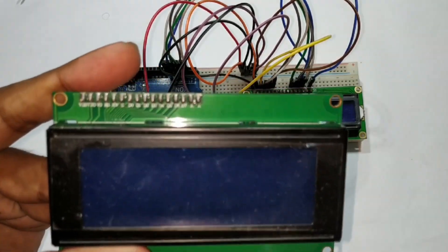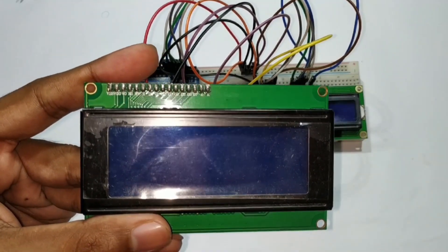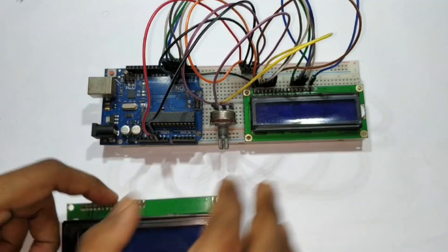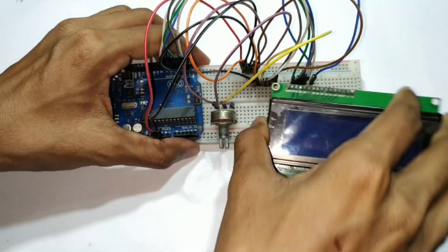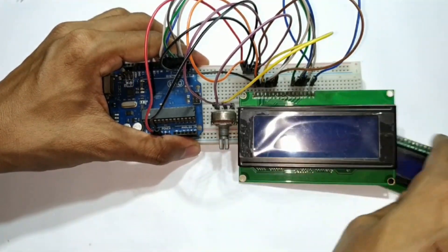Now we are going to interface another type of LCD display. This is a 20x4 LCD display. It has also 16 pins and connection will be the same as like 16x2 LCD display. Next I am replacing the 16x2 LCD display with 20x4 LCD display on the breadboard.